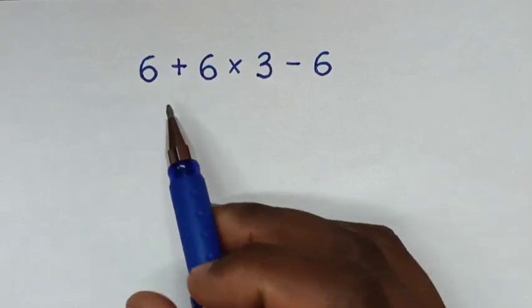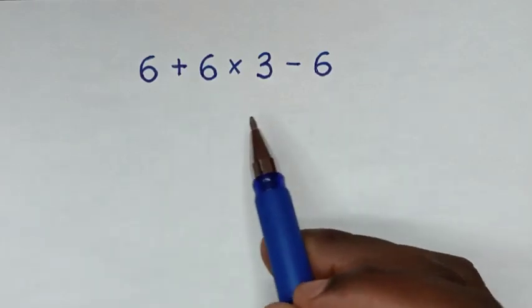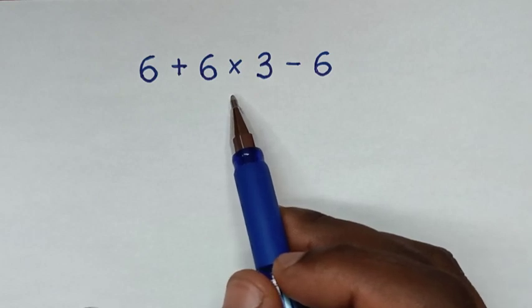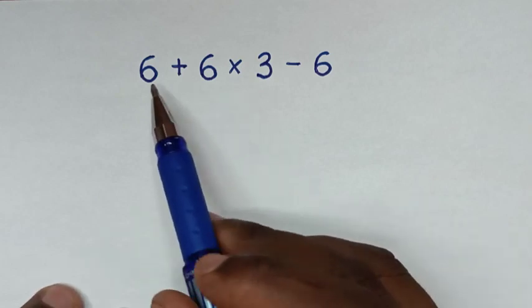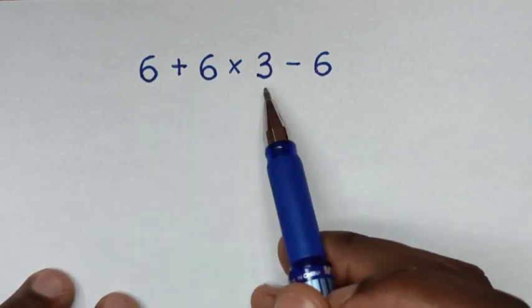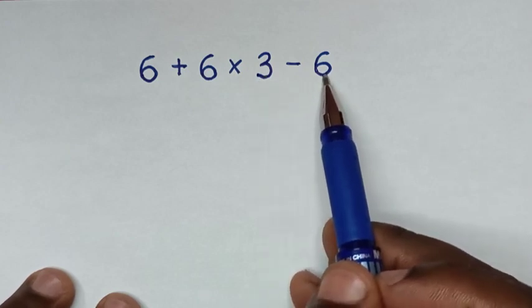Hello, you are welcome to solve this math problem about orders of operations. In this math problem it is 6 plus 6 times 3 minus 6.